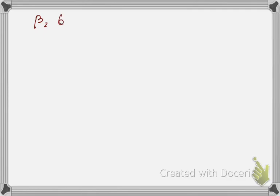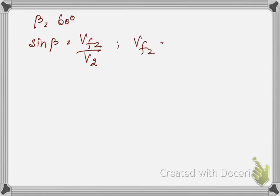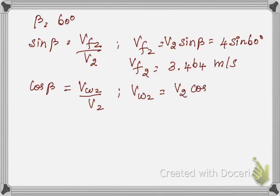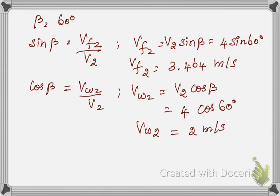Since beta = 60°, we can find vf2 and vw2 using the outlet velocity v2 = 4 m/s. sin(beta) = vf2 / v2, so vf2 = 4 × sin(60°) = 3.464 m/s. Then cos(beta) = vw2 / v2, so vw2 = 4 × cos(60°) = 2 m/s.